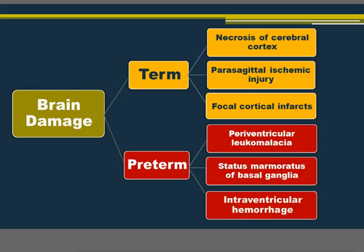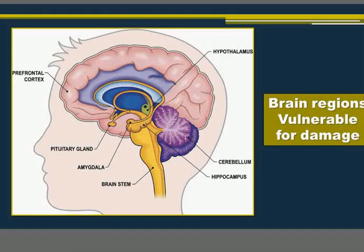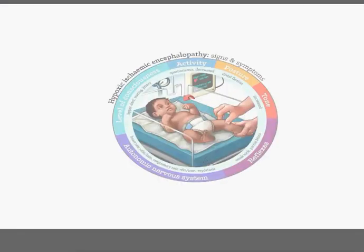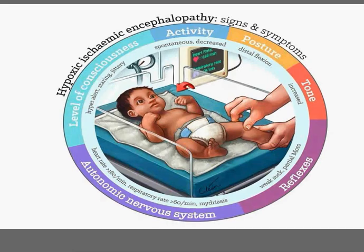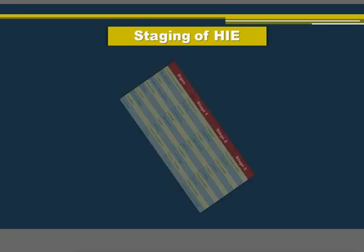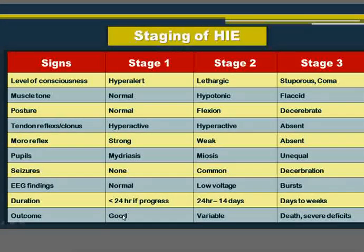Brain damage in HIE differs according to the baby's gestational age — whether term or preterm — with different areas affected accordingly, leading to different clinical presentations. Clinical signs include changes in level of consciousness, activity, posture, tone, reflexes, and the autonomic nervous system. A staging system classifies HIE into Stage 1 (mild), Stage 2 (moderate), and Stage 3 (severe) based on these parameters. The outcome ranges from good in Stage 1 to death or severe deficit in Stage 3.